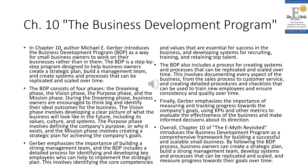During the dreaming phase, business owners are encouraged to think big and identify their ideal outcomes. The vision phase involves developing a clear picture of what the business will look like in the future, including its values, culture, and systems. The purpose phase involves defining the company's purpose — why it exists — and the mission phase involves creating a strategic plan for achieving the company's goals. The BDP includes a detailed process for identifying and developing key employees who can help implement the strategic plan.